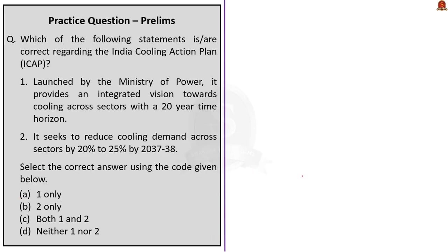The next question: which of the following statements is or are correct regarding the India Cooling Action Plan? Statement 1 says it was launched by the Ministry of Power and provides an integrated vision towards cooling across sectors with a 20-year time horizon. This statement is partially incorrect — the second part is correct but the first part is incorrect because this action plan was launched by the Ministry of Environment, Forest and Climate Change. Statement 2 says it seeks to reduce cooling demand across sectors by 20% to 25% by the year 2037–38 — this is correct. The correct answer is option B — two only.